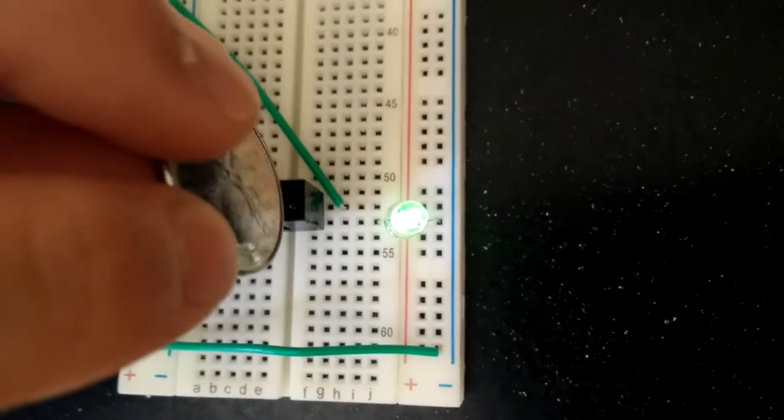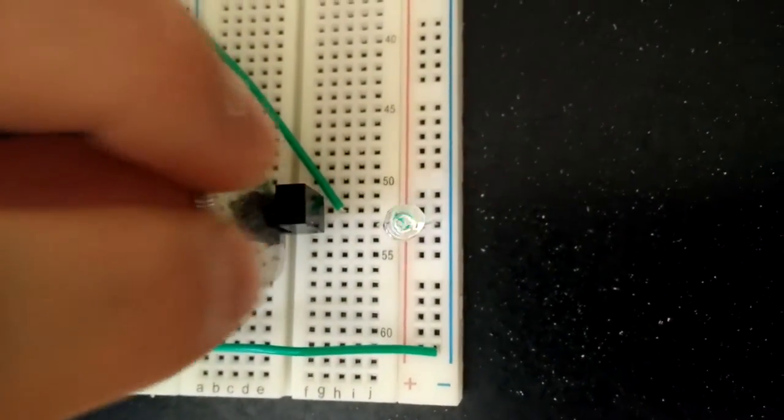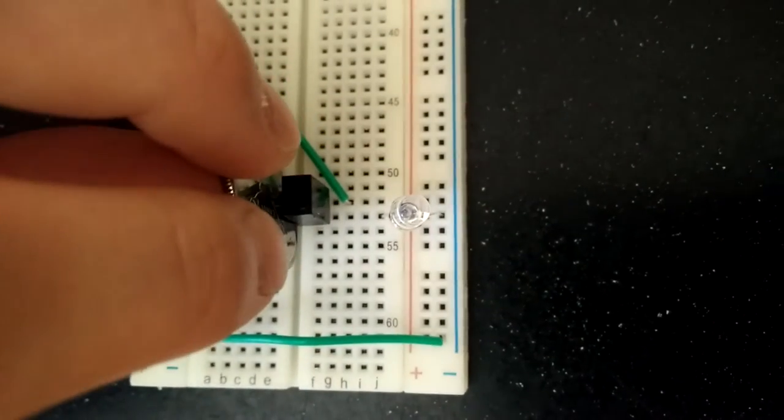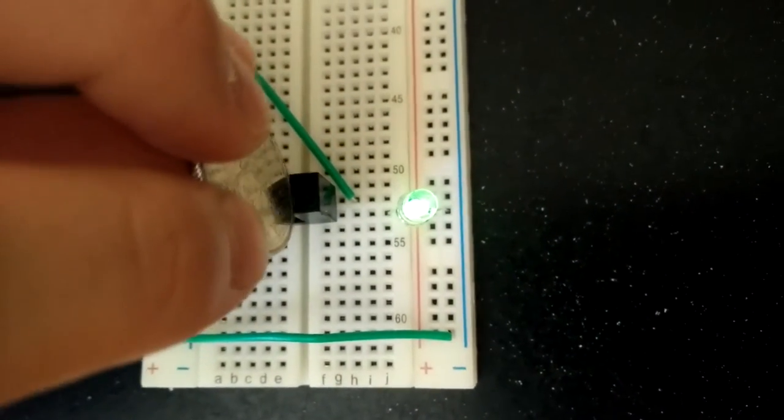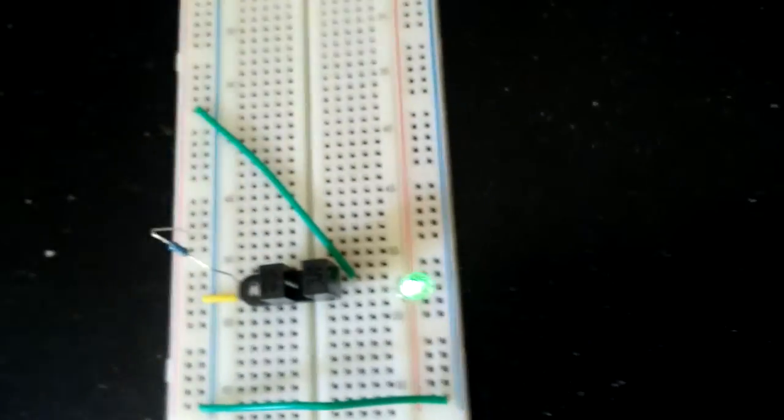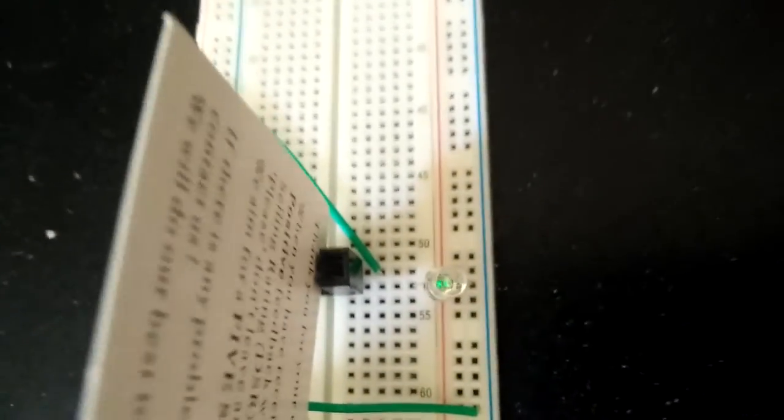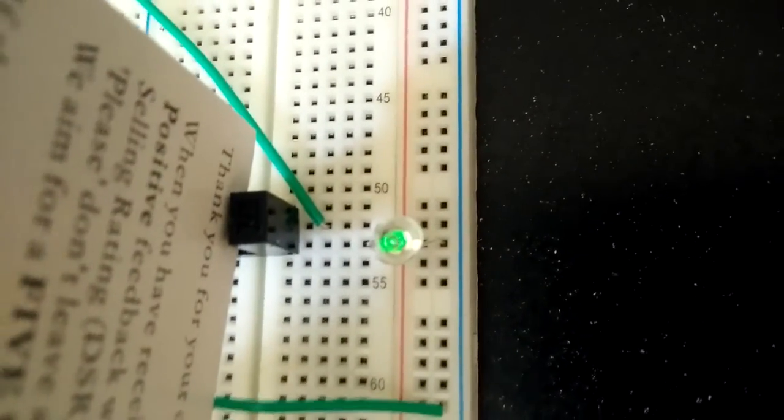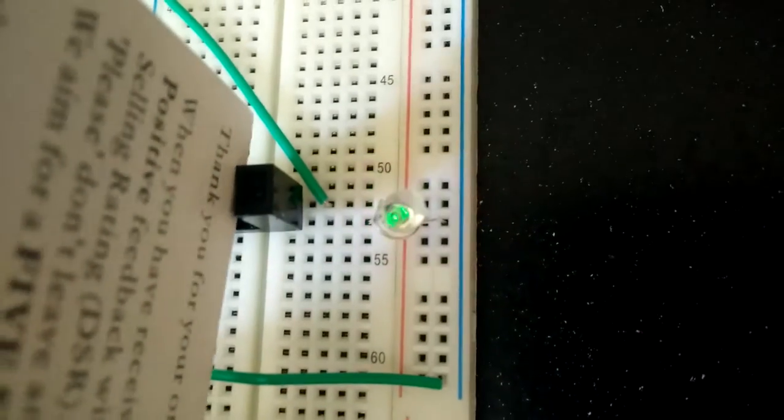So it's pretty quick, just on off, on off. Yeah, so this is a coin, it's pretty thick, but if you take something like a business card and you put that in between, you can see that the light doesn't fully turn off. It gets dim but it doesn't fully turn off.